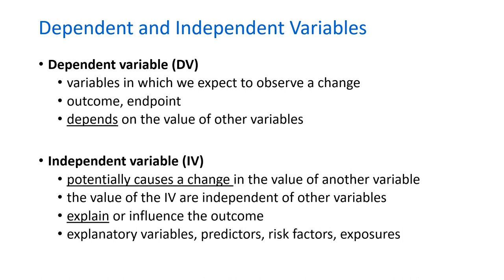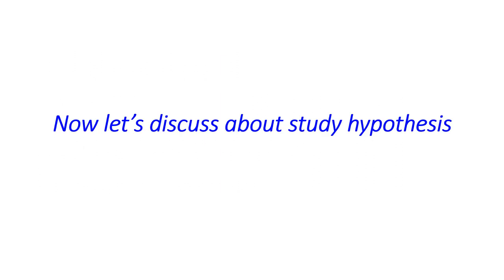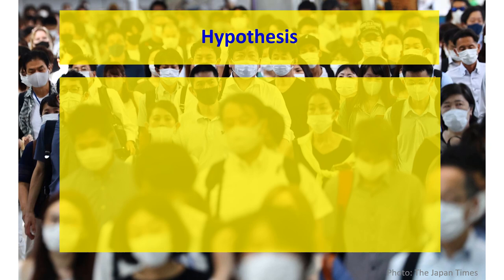Independent variables can explain or influence the outcome — these are the explanatory variables, predictors, risk factors, or exposures. For example, if you're looking at a treatment or intervention in a population, you're looking at the effect of the intervention, which is the independent variable, on the outcome, which is the dependent variable. Prognosis — how well a disease is progressing, getting better or worse — can depend on different conditions, like being overweight increasing risk of an outcome. Etiology or causation asks: does this exposure cause or increase risk of this outcome?